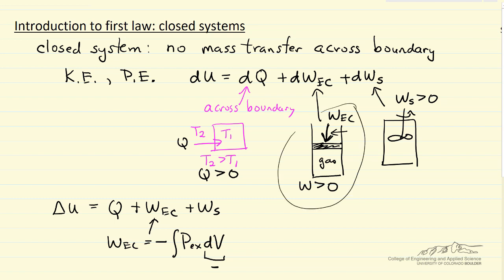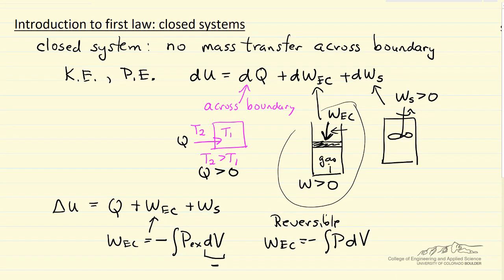If it's reversible, and we'll talk elsewhere in other screencasts what we mean by that, then this expansion compression work is minus integral of the pressure of, for example, the gas inside the system. Only if it's reversible that we can use the pressure in here, otherwise it's external pressure that is used in our calculation of work.